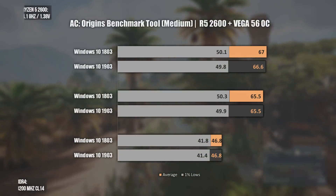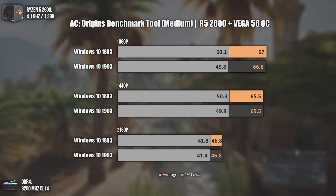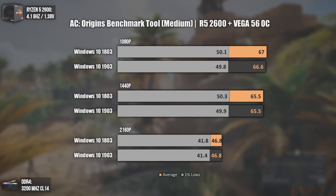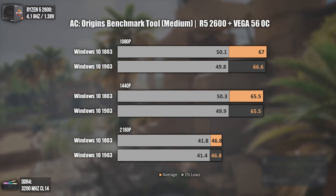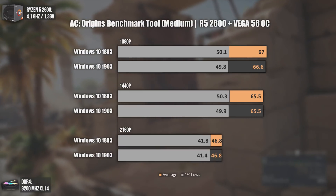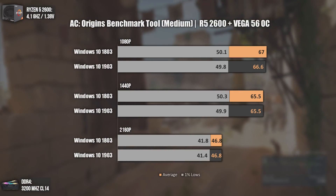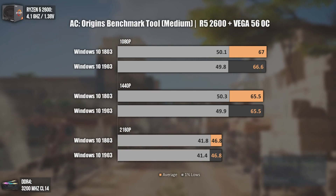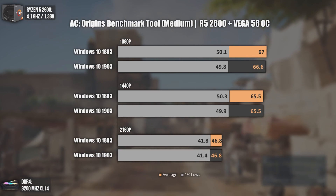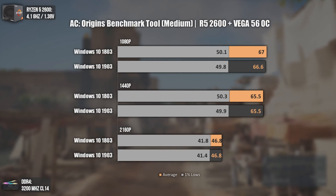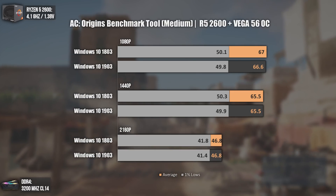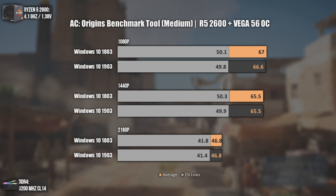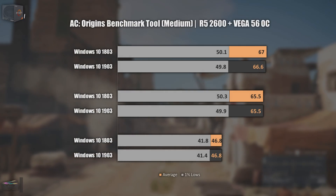The first game of today is Assassin's Creed Origins, a game well known to be CPU dependent, which is exactly why I wanted to test it with this new update. Sadly, the results are disappointing — even with the improved CCX filling, we can see no improvement between updates. At least the update didn't make things worse, which is already a plus in my opinion.